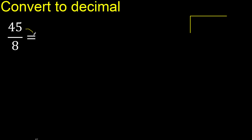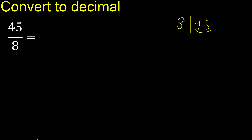45 divided by 8. 4 is less, therefore next 5. 45 is not less, therefore with 45: 8 multiplied by which number is nearest to 45 but not greater?